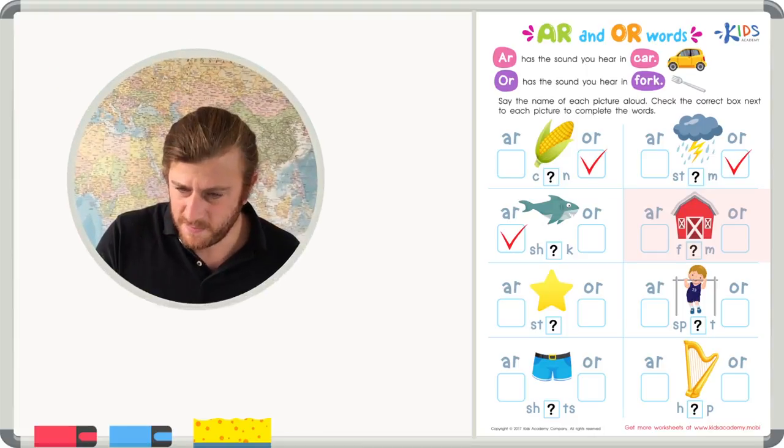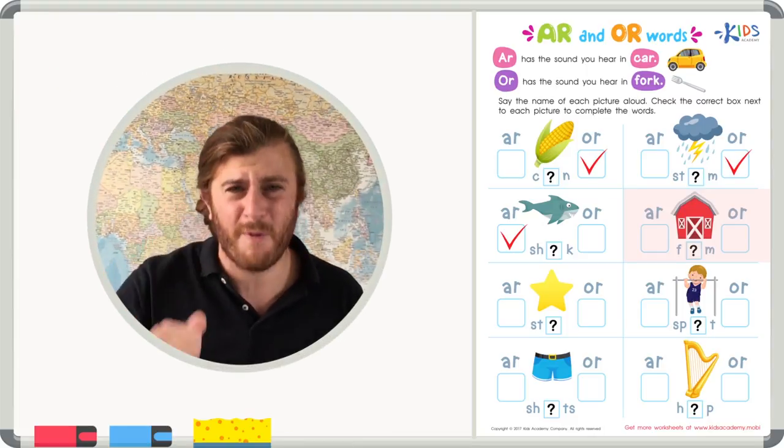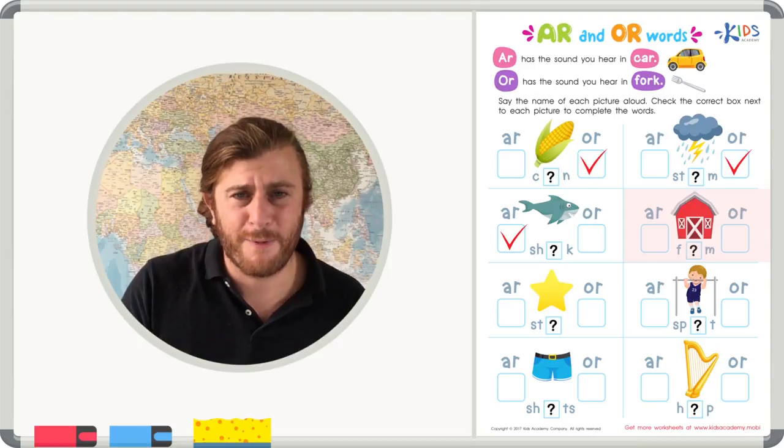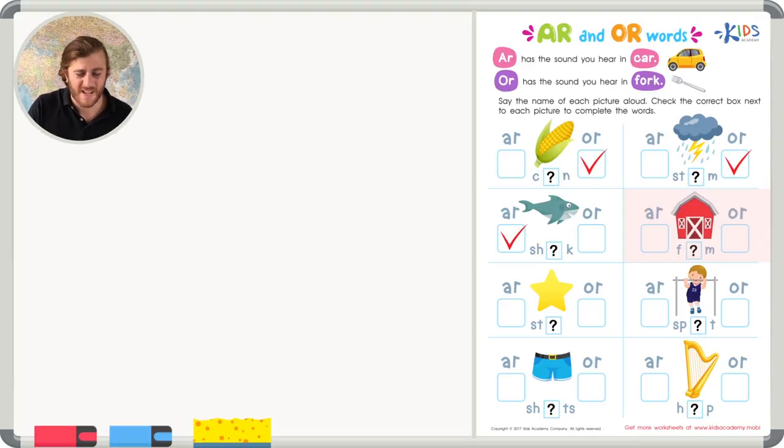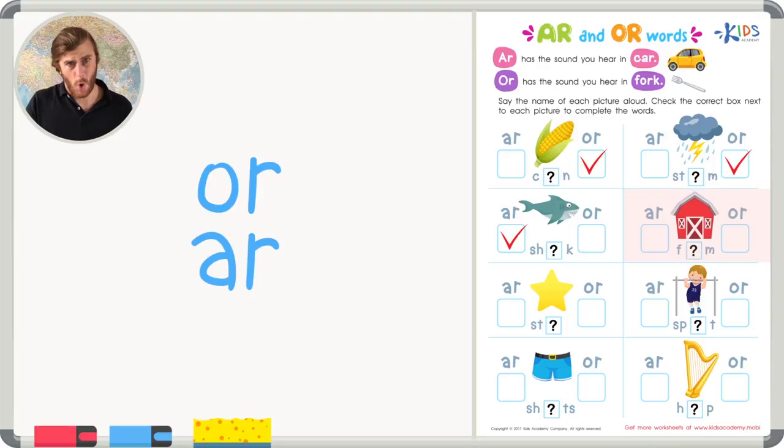Our next picture is of a farm. F-a-r-m. Farm. What sound do you hear? Do you hear A-R or O-R? F-a-r-m or f-o-r-m. Form is a word, but in this picture I see a farm. F-a-a-arm or f-o-o-rm. I think it's that A-R sound for farm.